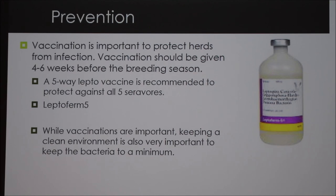For prevention, vaccination is important to protect herds from infection. Vaccination should be given 4 to 6 weeks before the breeding season begins. A 5-way Lepto vaccine is recommended to protect against all 5 serovars — pictured here is Leptofirm 5. Keeping a clean environment is also very important to keep the bacteria to a minimum.